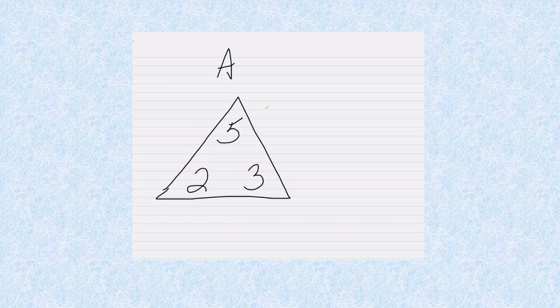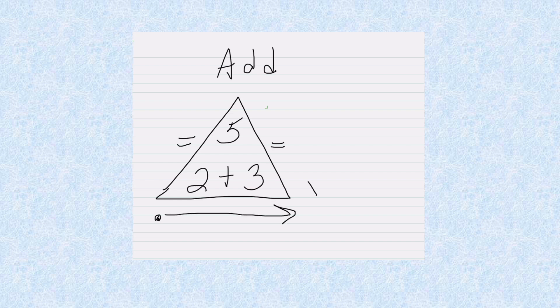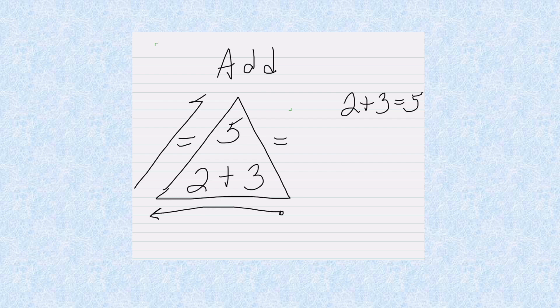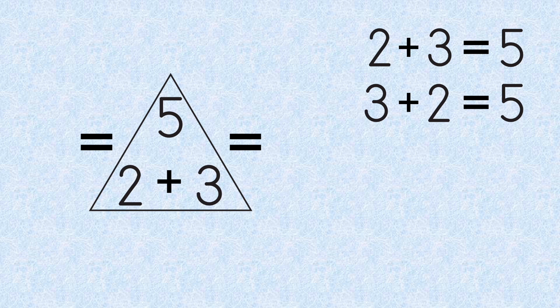To use our triangle, let's put in some operation signs to help us. A plus sign goes here and we can put two equal signs here and here. Now we're ready. When we add, we start at the bottom and go over and up. Let's start at the bottom right and go over and up. 3 plus 2 equals 5. We've got our two addition facts for this Fact Family.